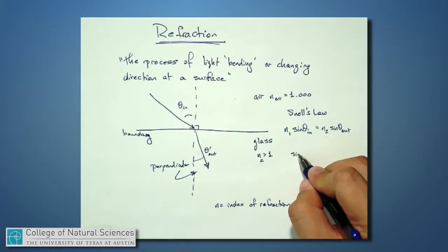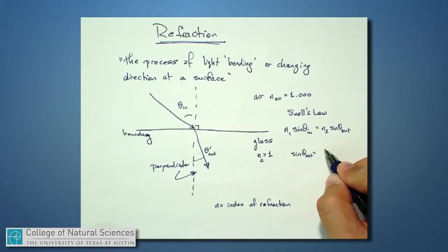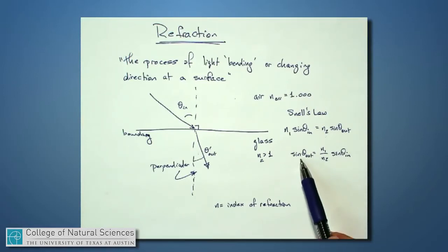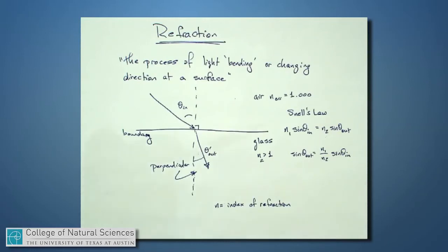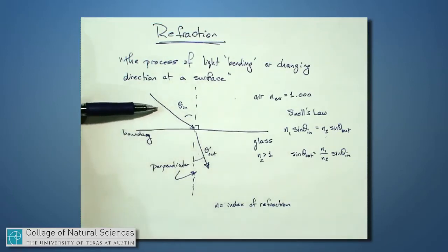if I think about what is sine of theta out, it is n1 over n2 sine of theta in, and if this ratio n1 over n2 is smaller than 1, then this outgoing angle is smaller than that ingoing angle. And that's what happens when I go from something like air into something like glass. The angle actually got smaller, and that's kind of what we were seeing a moment ago.